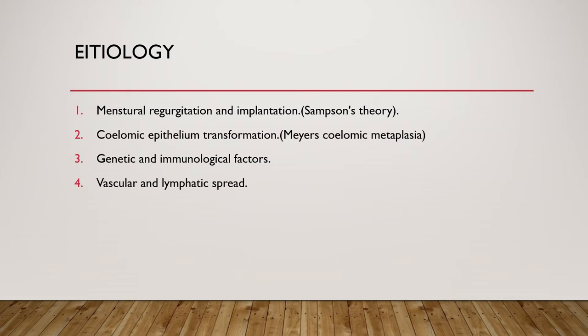The second theory is the coelomic epithelium transformation, or Mayer's coelomic metaplasia. In this theory, the lining of the pelvic cavity and the Müllerian duct — the epithelial cells — will de-differentiate and return to their embryonic origin, then form endometrial tissue, which leads to endometriosis. This is triggered by hormonal or inflammatory reaction and can explain endometriosis found in patients with congenital absence of the uterus, which Sampson's theory cannot explain.